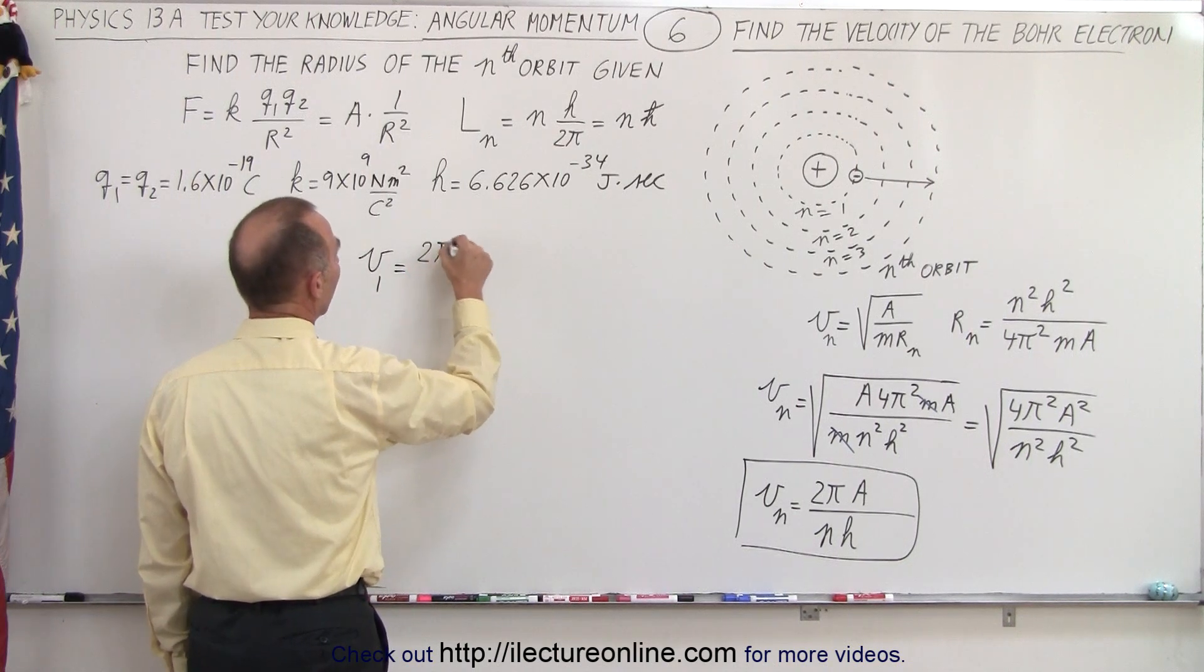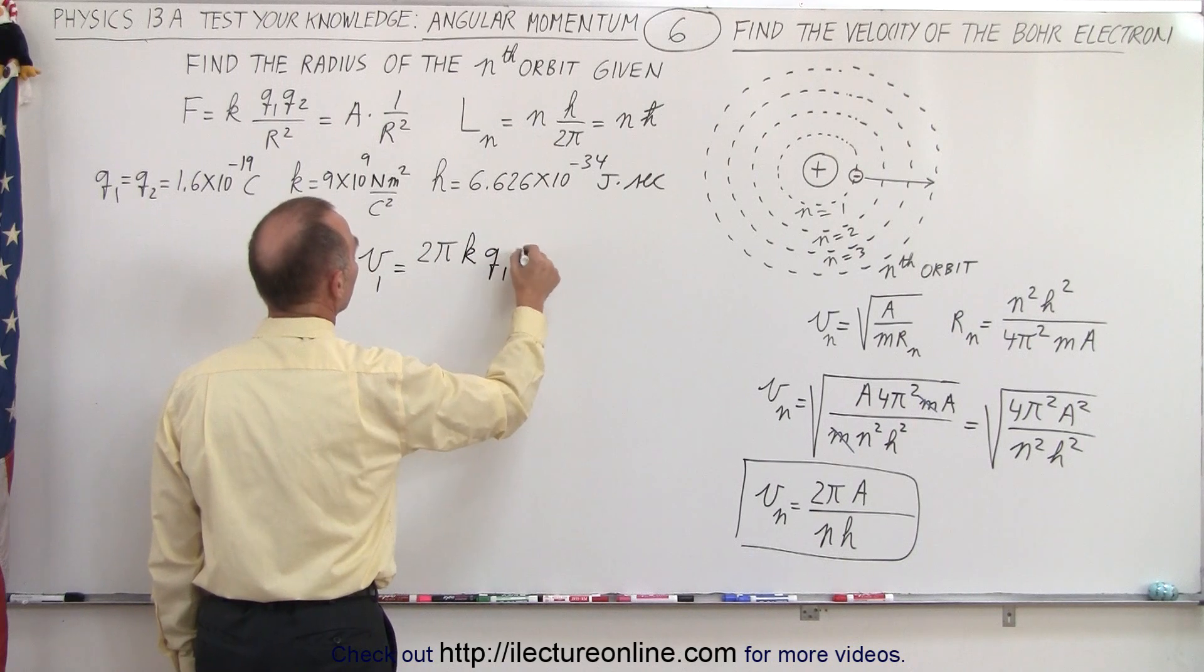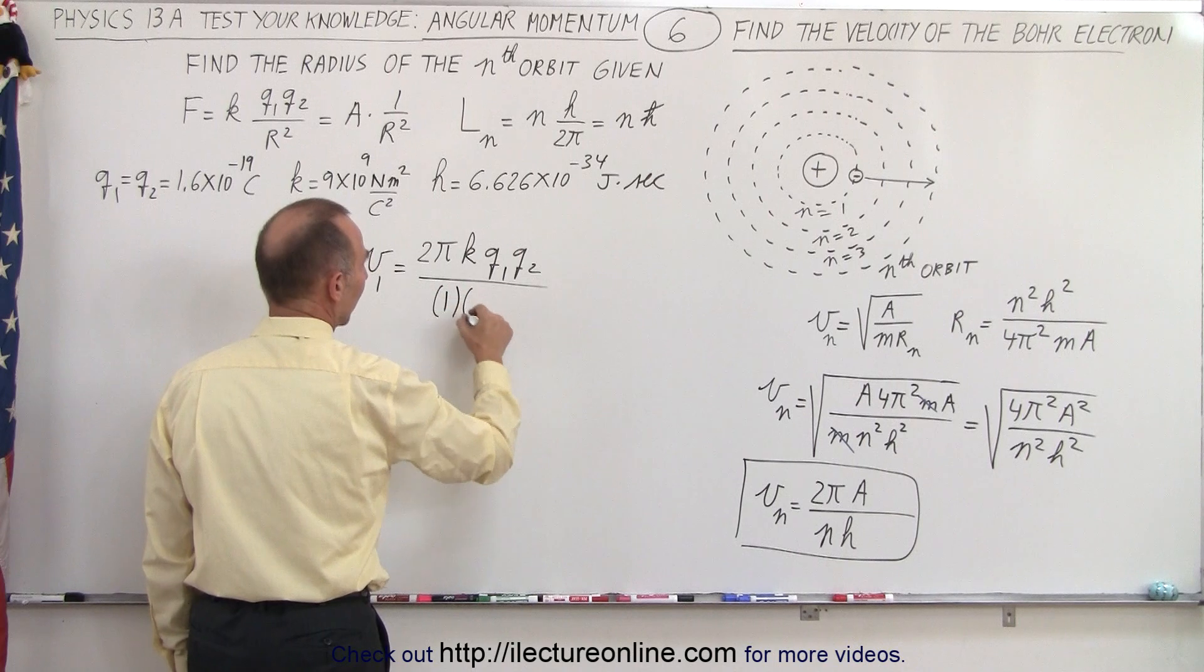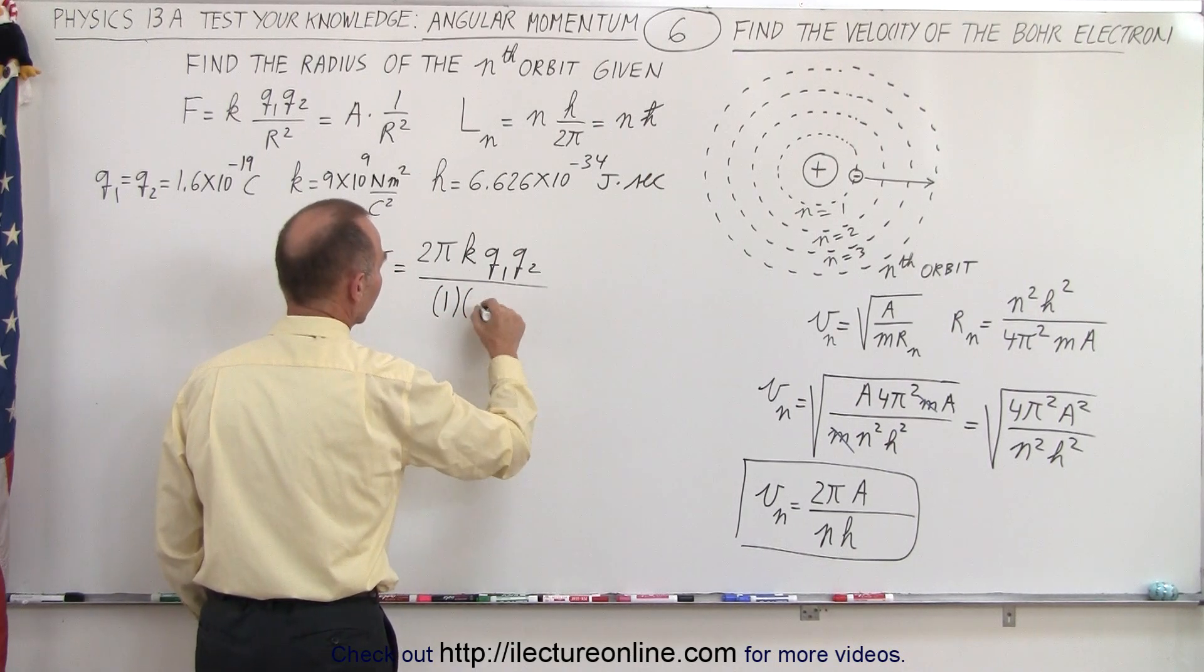But for the first orbit, we get 2 pi times a, and a would be k q1 q2, all divided by n, which is now 1, times h, which is, well, we'll just write h, because we'll plug in the values later.